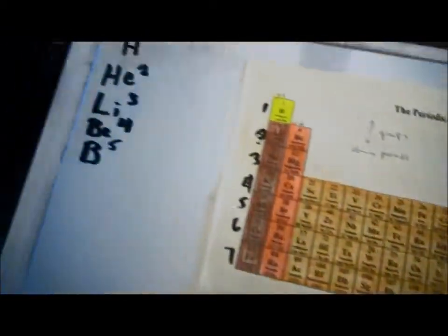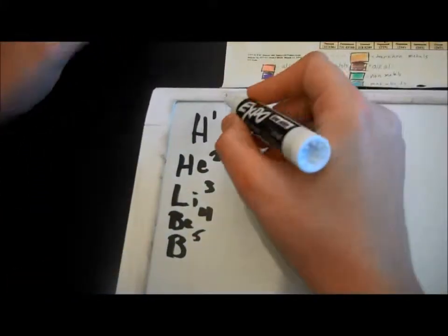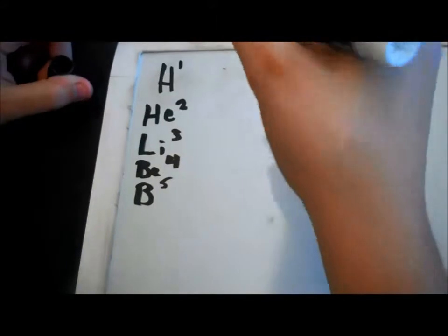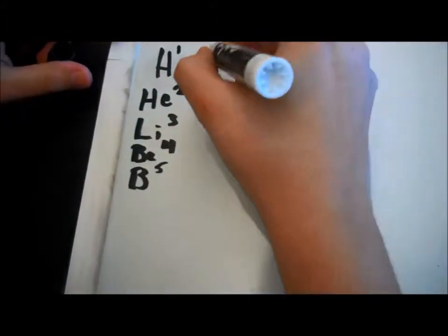I have already selected the elements that I'm going to show you how to do the electron configuration on. This little number up here, the superscript, is how many electrons are in that element. So, we'll start with hydrogen. It's on 1s because it's on energy level 1. And it has 1 electron.